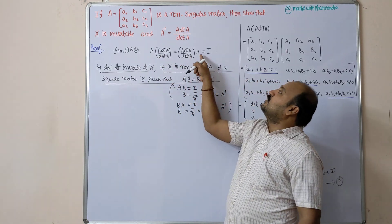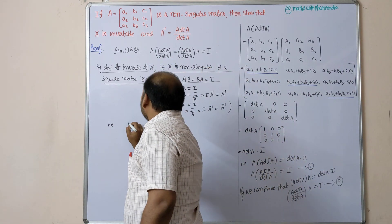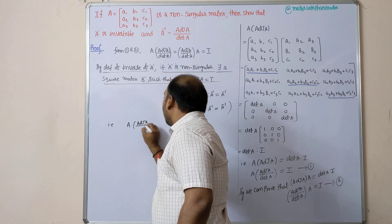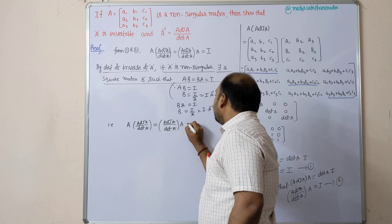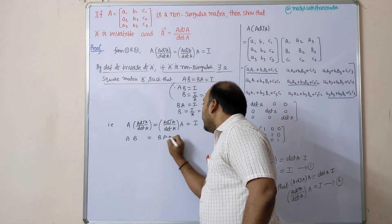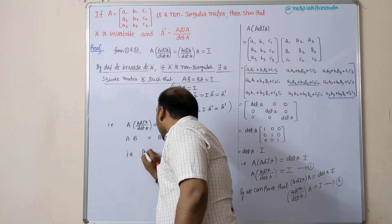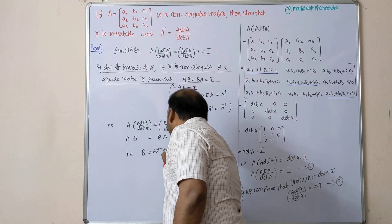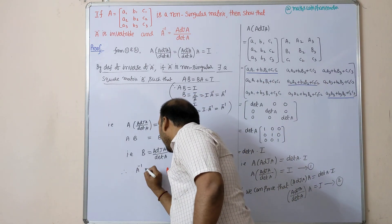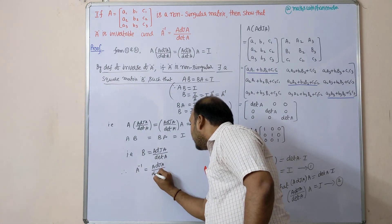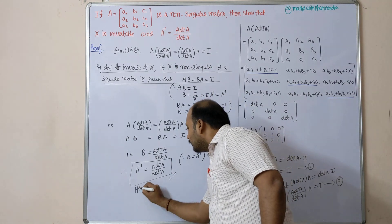Now comparing: A × (adjoint A / det A) equals (adjoint A / det A) × A equals I, with AB = BA = I. Here B corresponds to adjoint A / det A. Since B is called the inverse of A, comparing these two results gives B = adjoint A / det A. Since B equals A inverse, therefore A inverse equals adjoint A by det A.